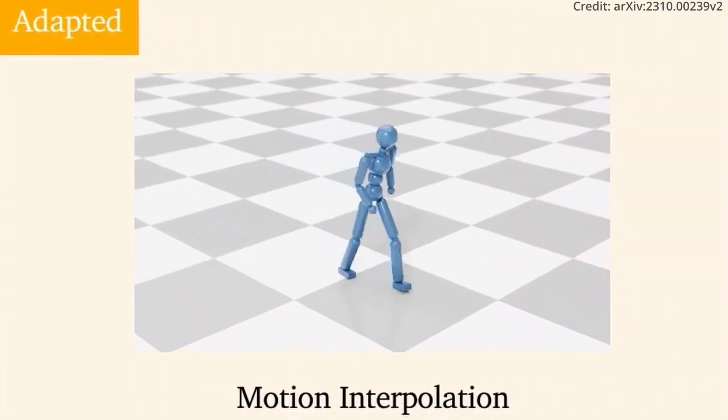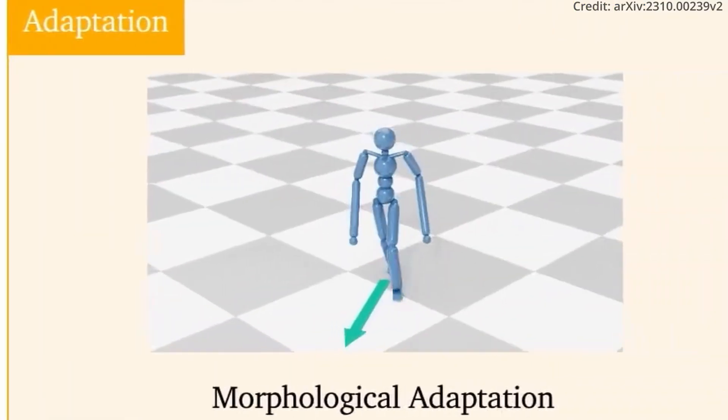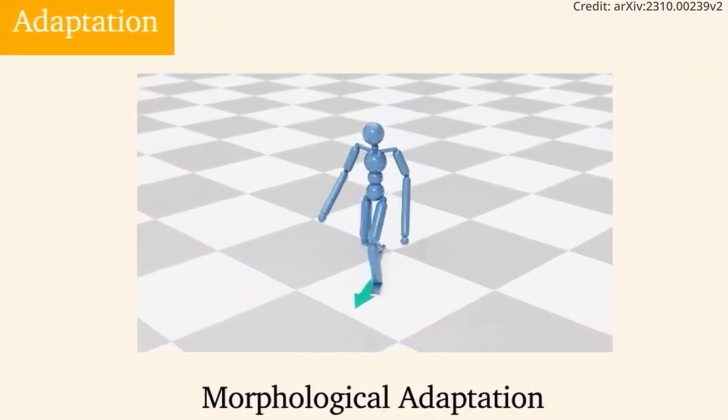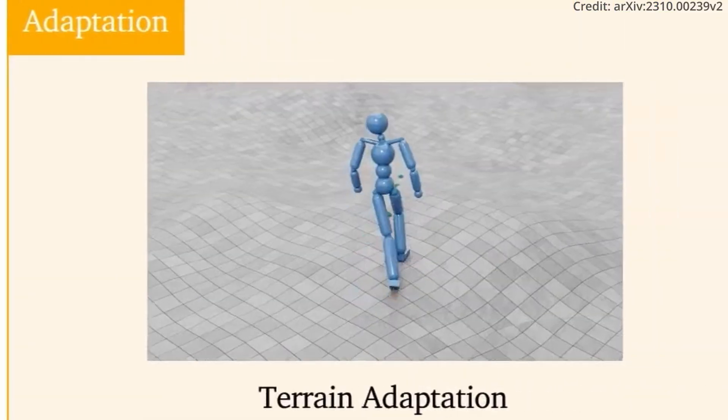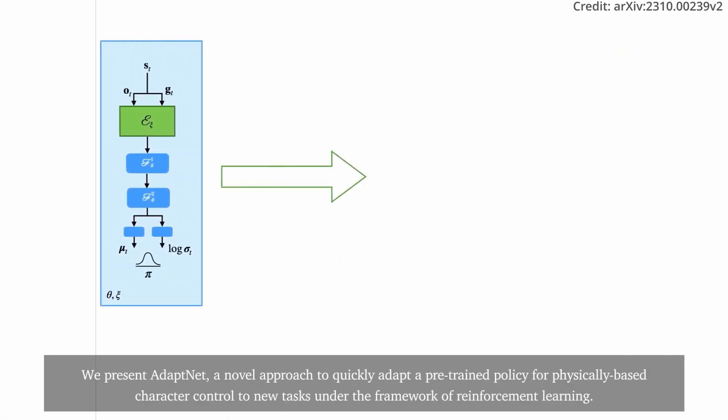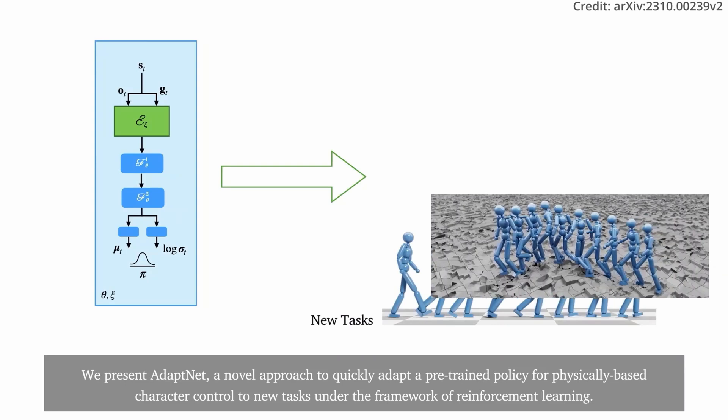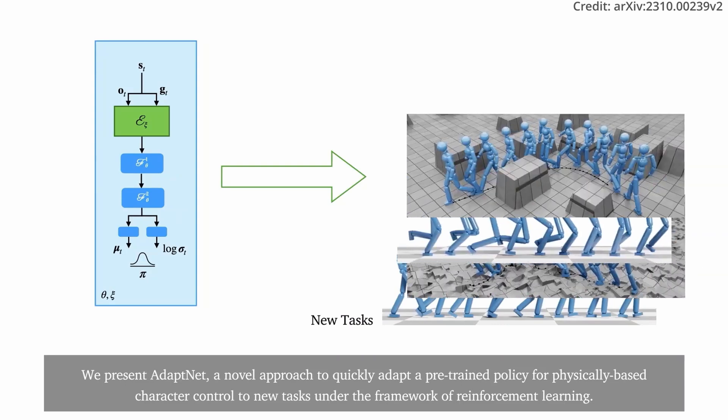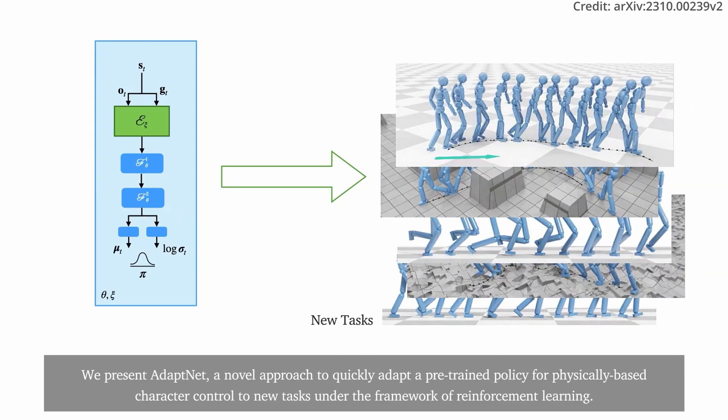From motion stylisation, interpolation between styles to morphological and environment adaptation, AdaptNet emerges as a versatile tool in the realm of AI and robotics. In fact, one of the standout features of AdaptNet is its capability to achieve motion stylisation using a few-shot type learning process.